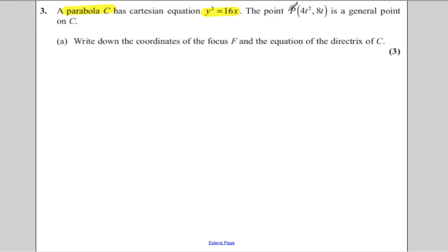There is a point P on the line which has x-coordinate 4t squared, y-coordinate 8t, and that's a general point on the line. Now, we are asked to write down the coordinates of the focus f and the equation of the directrix.